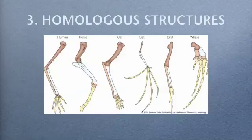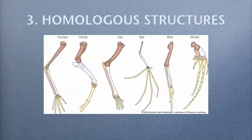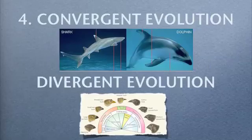Homologous structures show shared common ancestry, while the differences — like a bat's five fingers used for flying versus our five fingers used for grabbing — show adaptation to different environments. Convergent evolution is where two unrelated species like sharks and dolphins look alike because of the environment they live in — both have dorsal fins and a bullet-like shape. Divergent evolution is where related organisms diverged into different environments and changed over time.